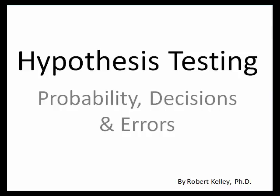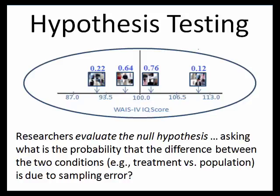In our scenario, the treatment group is six people randomly selected from the population. Our control group is the population itself. After we give the sample two weeks of vitamin water and measure their IQ, we'll ask: what's the probability that the difference between the population mean of 100 and the sample mean could have existed before any treatment was given — that it pre-existed the treatment and was due to nothing other than sampling error?